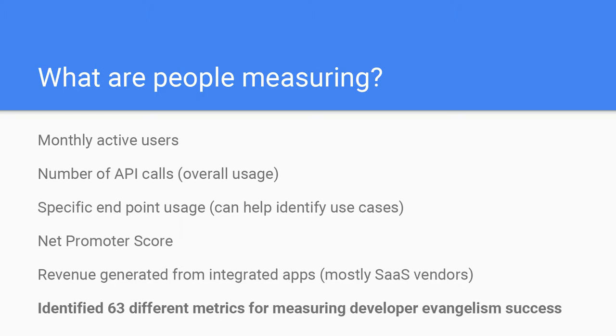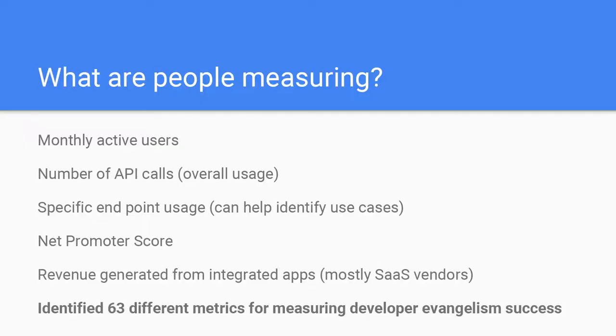Revenue generated from integrated apps — SaaS vendors are starting to do this. Intuit, who make FreshBooks, measure the number of apps built that integrate with FreshBooks and the revenue those apps bring overall. So far John Musser and I have identified 63 different metrics for measuring developer evangelism success, and we're working out the pros and cons of each. We'll have that released shortly — you can find out through my contact details.